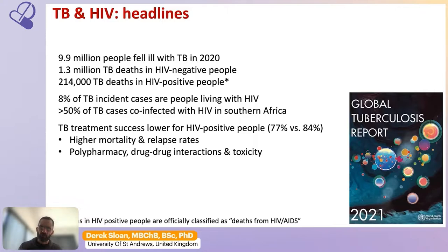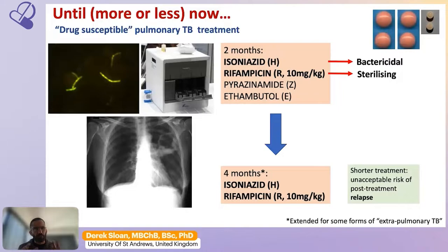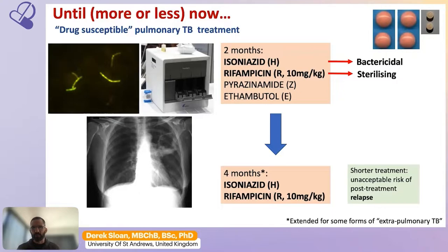A brief reminder of current first-line TB therapy: it's a six-month course for pulmonary tuberculosis. The first two months contain four drugs — isoniazid, rifampicin at a standard dose of 10 mg/kg, pyrazinamide, and ethambutol — followed by a four-month continuation phase of isoniazid and rifampicin. Isoniazid is bactericidal and rapidly kills TB cells. Rifampicin is sterilizing, killing TB cells in a more quiescent metabolic phenotype, which is important to achieve full sterilization and cure.